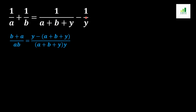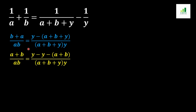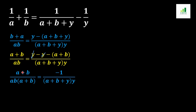In the second method, b multiplies with 1 and a multiplies with 1 to get (a+b)/ab. On the right, y multiplies with 1 and the expression multiplies with 1, giving (y - (a+b+y)) / ((a+b+y)·y). We arrange as (a+b)/ab, and both y terms cancel. We get (a+b)/(a+b), and -ab divides with ab to give -1 over (a+b+y)·y.